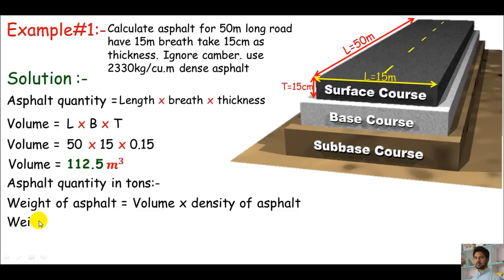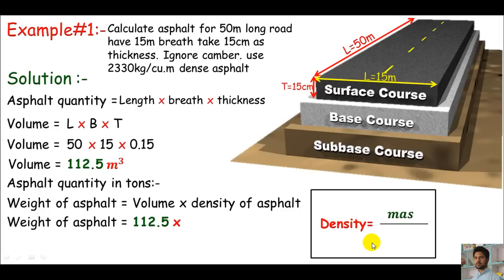I can say the weight of asphalt is volume, and we calculated the volume of this course and this layer a few minutes ago. I'll put this in the equation which is 112.5, the volume of this course or layer, times the density of asphalt. But what's the density? If you don't know, just look. The density is mass per volume.